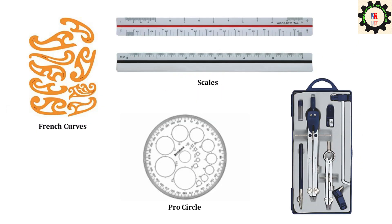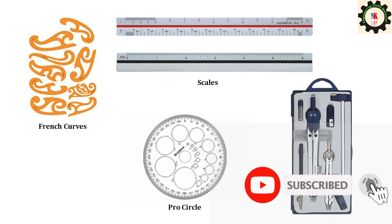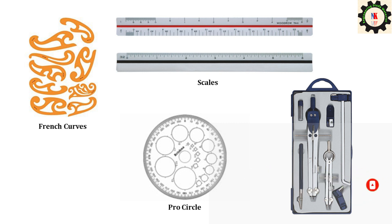French curves are used for drawing irregular curves that cannot be drawn by compasses. Scales or rulers are devices with precise graduations marked on their straight edges for precise measurements. Scales are made of celluloid or cardboard. Eight types of scales are used — M1, M2, and so on up to M8 — as per BIS 10713-1983.